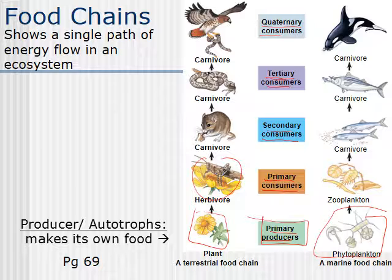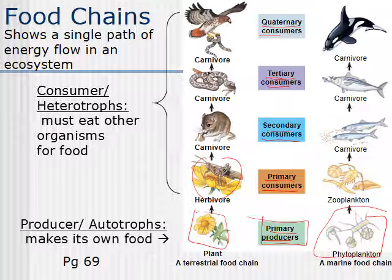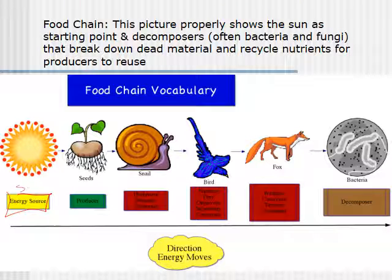Producers, also called autotrophs, make their own food — they're the ones who do photosynthesis usually. Whereas consumers, also called heterotrophs, must eat other organisms in order to survive. Each consumer eats the consumer below it. I like this picture of a food chain because it properly shows that the first energy source for the food chain is the sun.